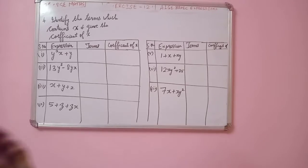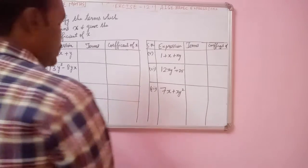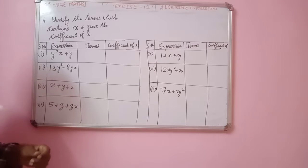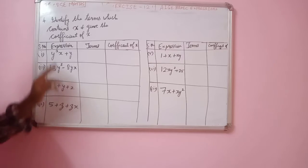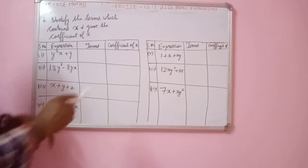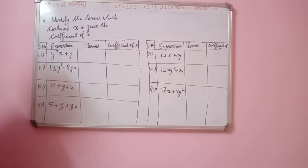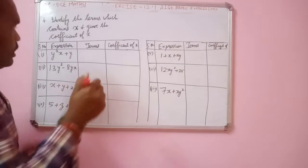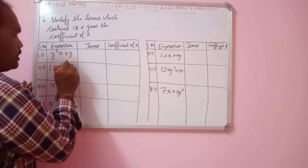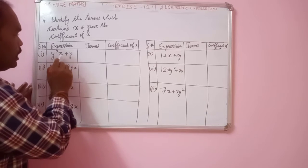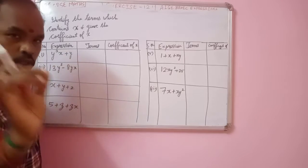In Exercise 12.1, Algebraic Expressions, fourth problem: identify the terms which contain x and give the coefficient of x. First of all, we need to identify the terms — whatever expression they have given. This is the question; the expression is the question.